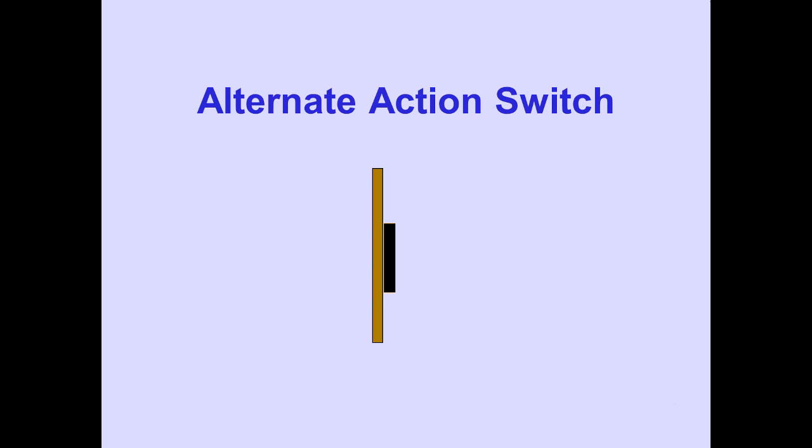When pushed a second time, the associated system is turned off and the switch returns to the out position and remains in the out or off position.